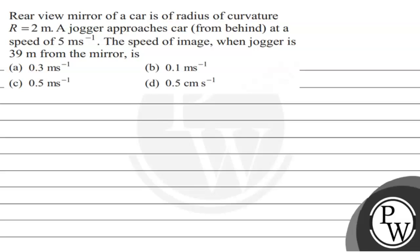Hello everyone, let's read this question. The question says: rear view mirror of a car is of radius of curvature r equal to 2 meter. A jogger approaches the car from behind at a speed of 5 meter per second. The speed of image when the jogger is 39 meter from the mirror is: option A is 0.3 m/s, option B is 0.1 m/s, option C is 0.5 m/s, and option D is 0.5 cm/s.